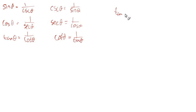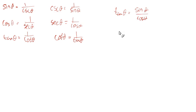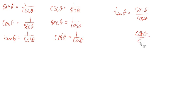The tangent is also equal to sine over cosine — that's another definition of the tangent. Since the cotangent is the reciprocal of the tangent, and the tangent is sine over cosine, the reciprocal of sine over cosine is cosine over sine. And that's the cotangent.